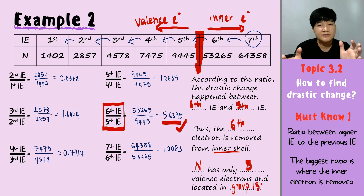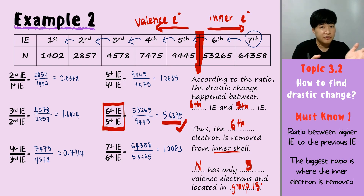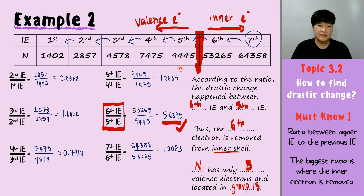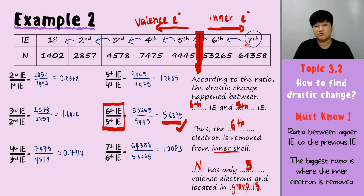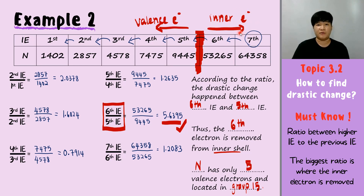It is as simple as: copy the information given, find the ratio, choose the largest number, identify where the drastic change occurred — everything before the drastic change is your valence electron, and everything after is in the inner shell.